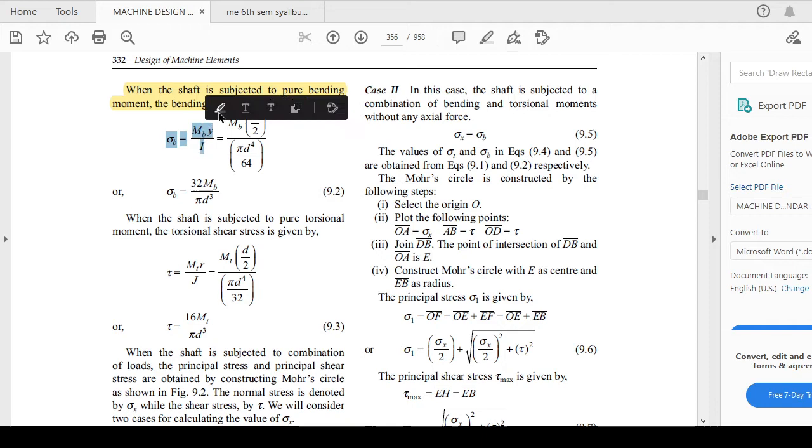This is nothing but your bending equation, which you have studied in previous semester subjects of design. This is for your bending moment. Similarly, when the shaft is subjected to pure torsional moment, the torsional shear stress is given by τ = Mt × r/J.